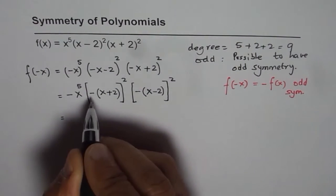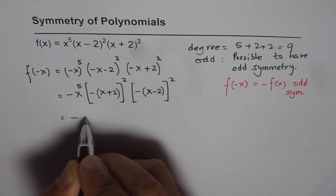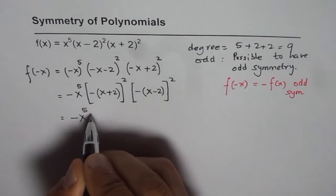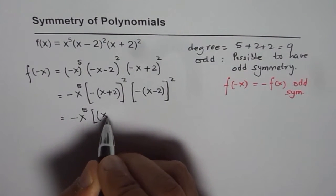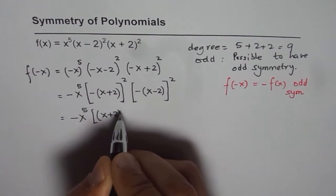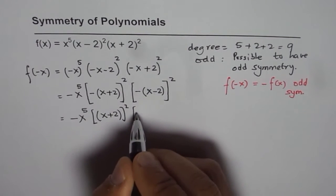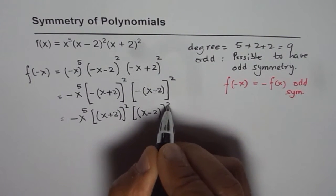Now, square of negative 1 is positive. Therefore, I can write this as -(x^5), and since this is positive, I can write this as (x + 2)^2. We are left with (x - 2)^2.